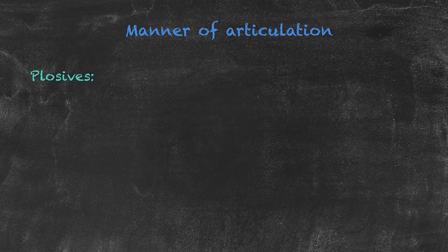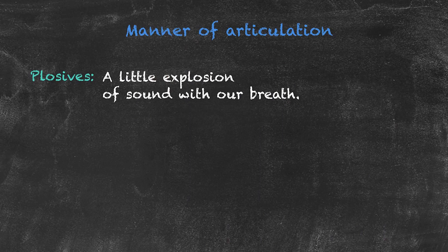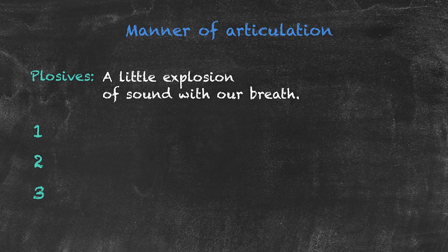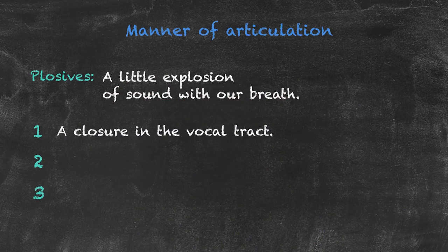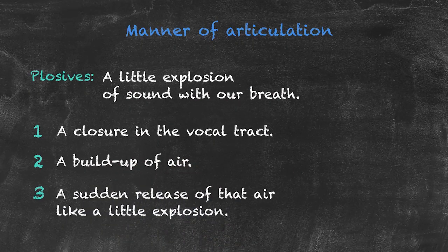First we have our plosive sounds. As the word might indicate, we have basically a little explosion of sound with our breath. The plosive sounds are made through a three-step process. First, there's a closure somewhere in the vocal tract. Second, there's a buildup of air, and finally, there's a sudden release of that air, like a little explosion. If we look at some of the sounds made this way, we might better understand why they are called plosives.